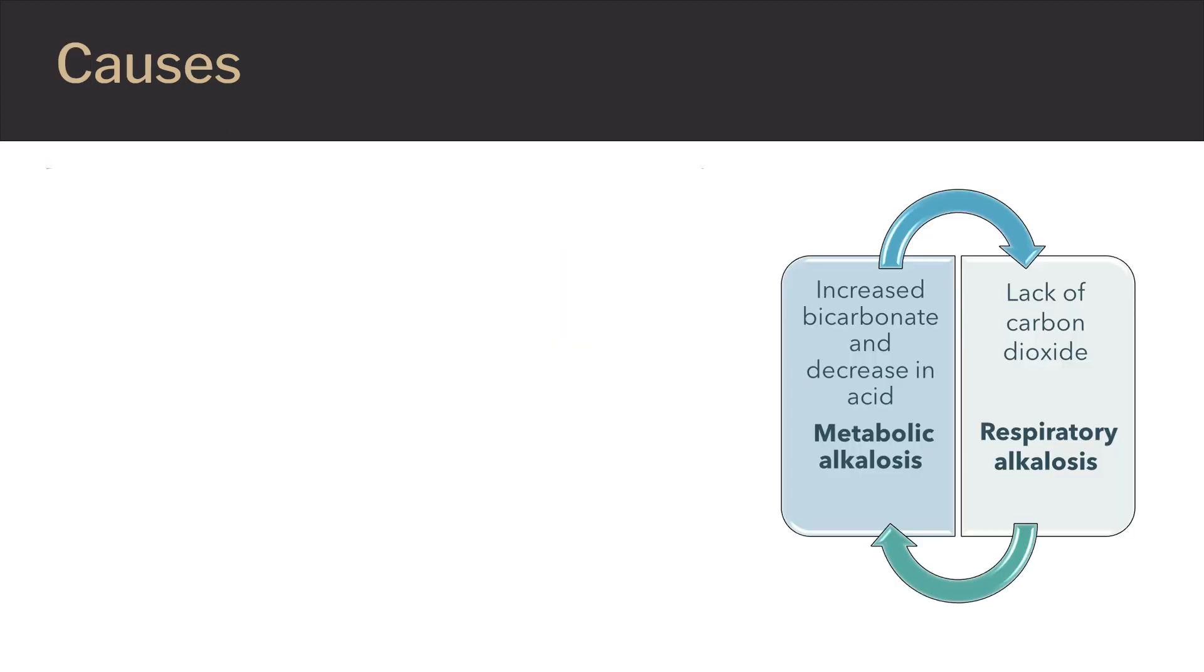If too much bicarbonate in the blood, a loss of acid from the blood, or a low level of carbon dioxide in the blood overwhelms the body's acid-base control system, the blood will become alkalotic. Alkalosis is categorized depending on its primary cause as either metabolic or respiratory. Your kidneys maintain the body's pH to ensure it doesn't become too alkaline.